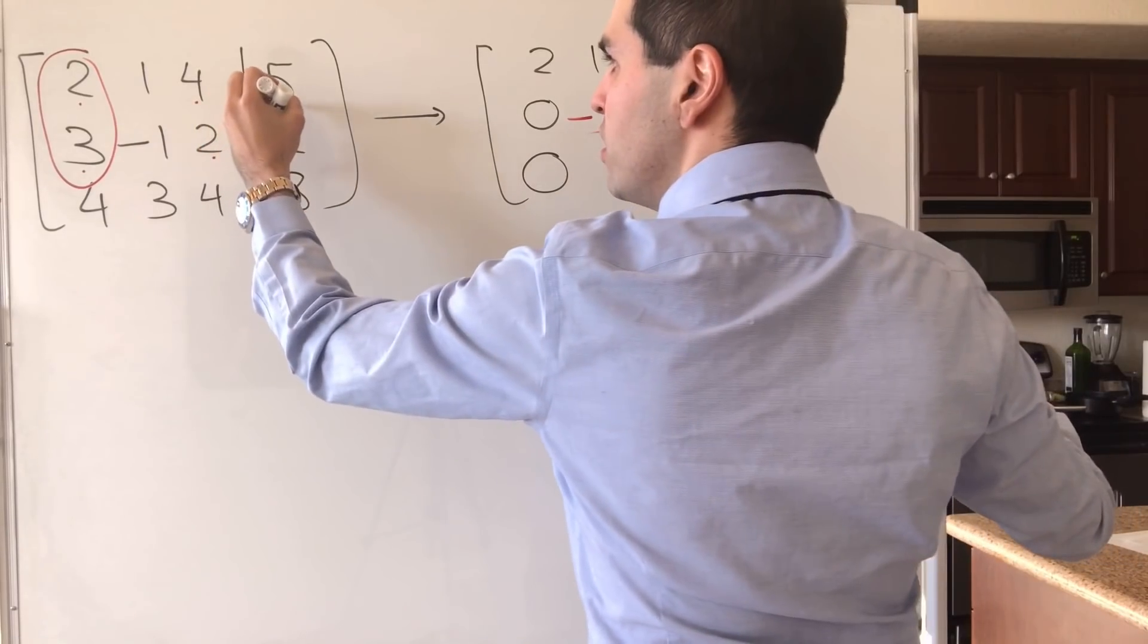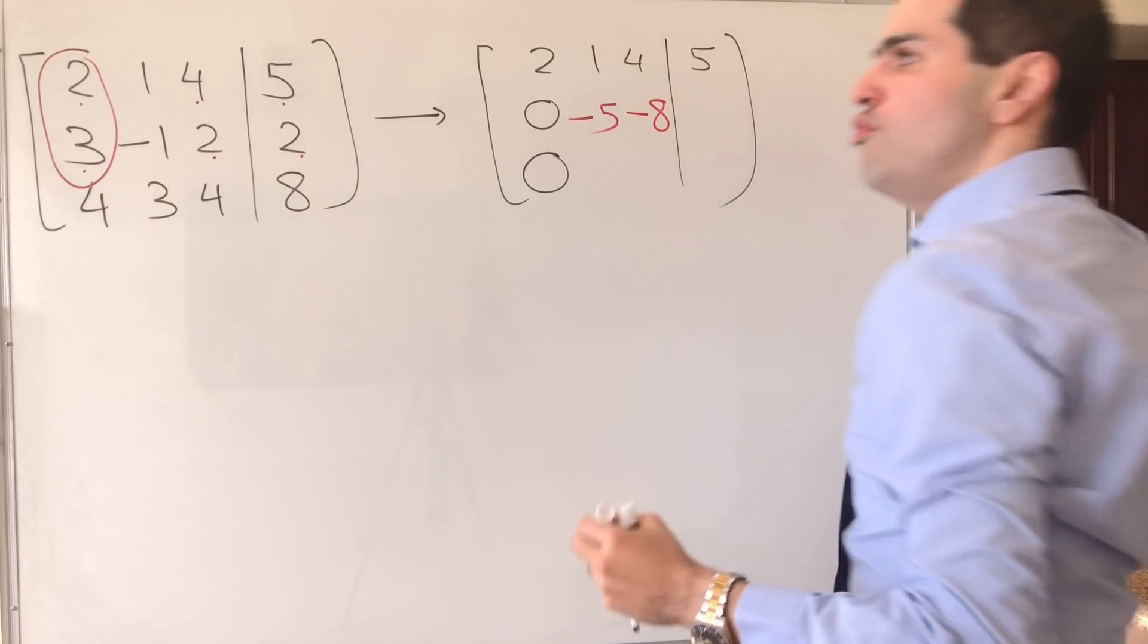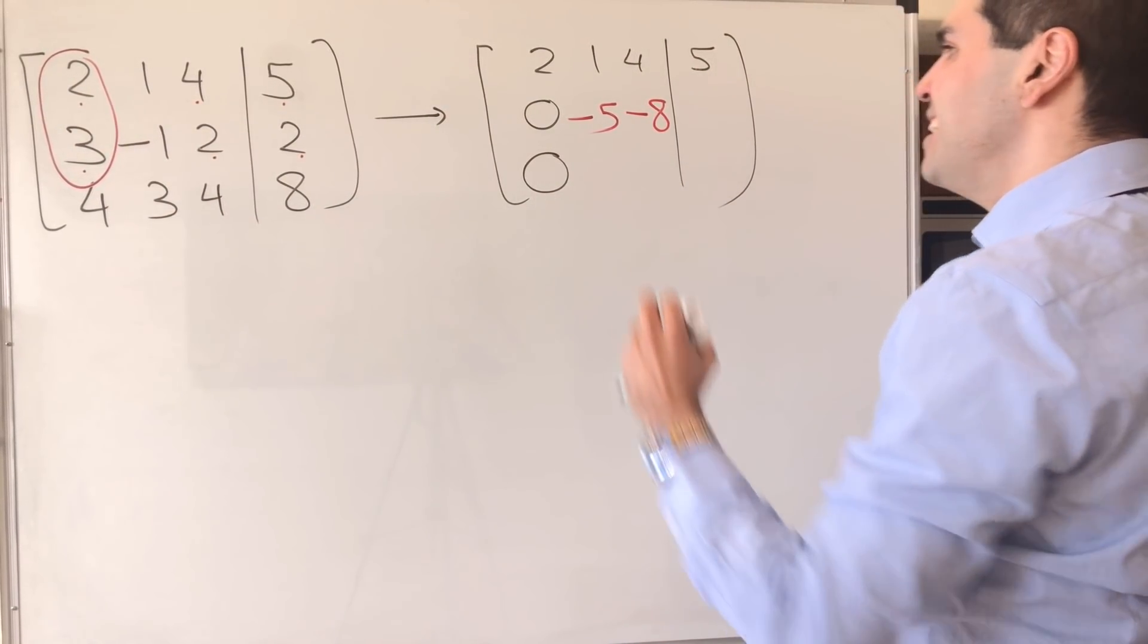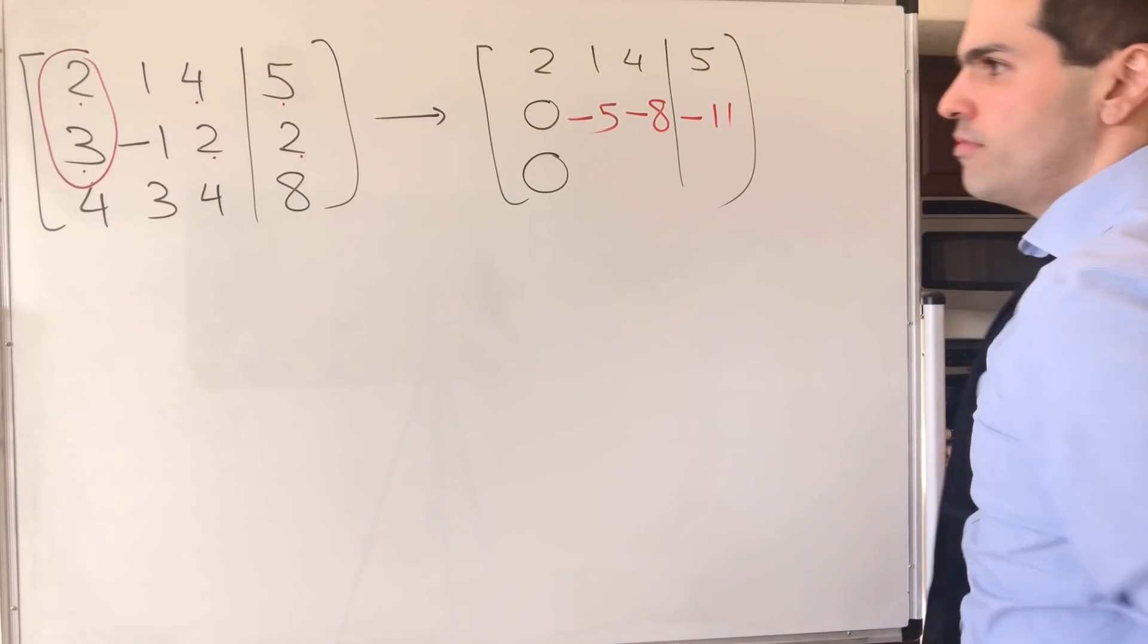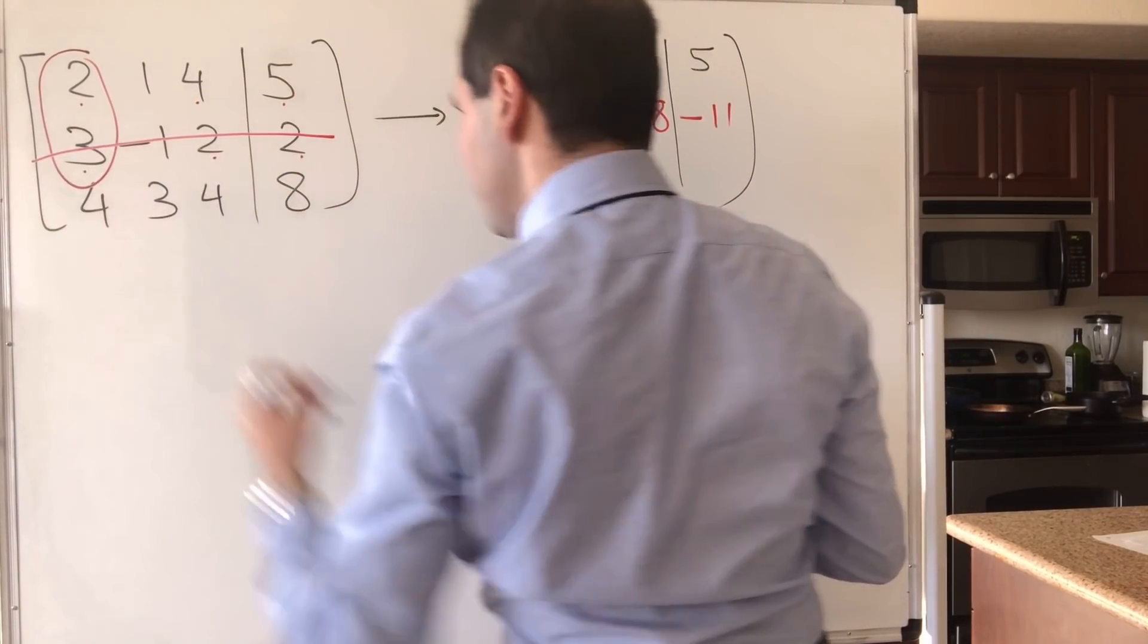And then you continue. So you keep the 2, 3, but take the determinant of 2, 5, 3, 2. So 4 minus 15, that is minus 11. And then, since you're done with the second row, you just delete it.